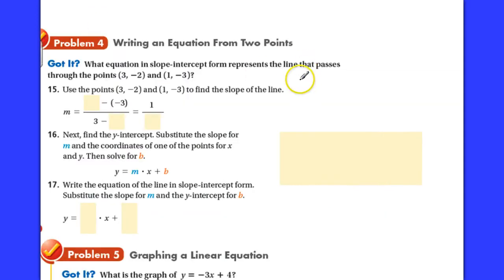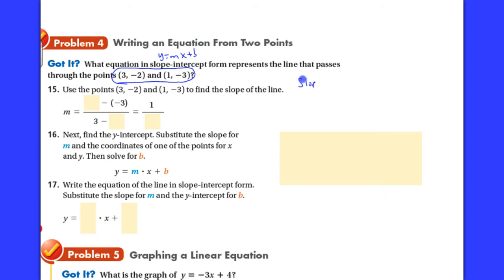On the next page: how about writing an equation given two points on a line? It says: write the equation in slope-intercept form — remember that's y equals mx plus b — that represents the line passing through these two points. The first thing you have to find is the slope. Number 15 asks you to use the points (3, negative 2) and (1, negative 3) to find the slope. If you don't know the slope, you can't find the equation of the line.